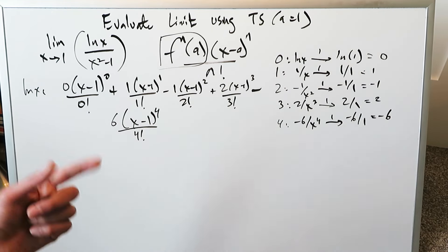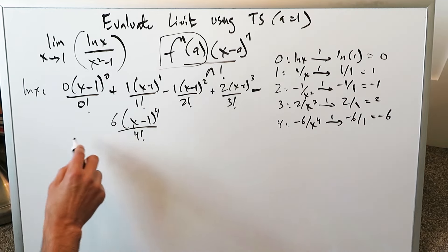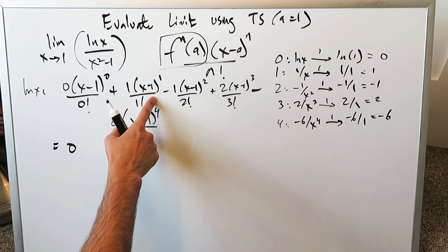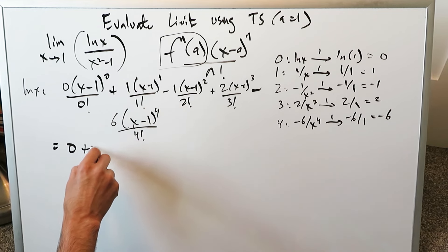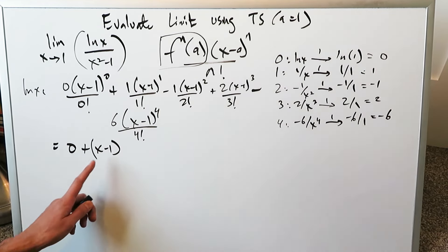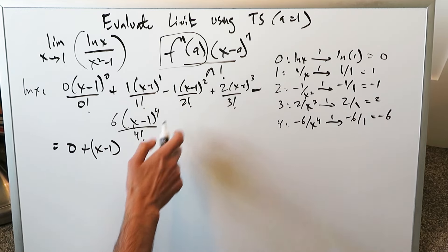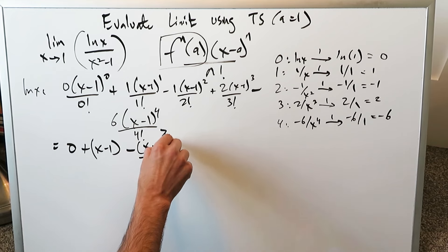I want to clean this out because I have to still evaluate this. When I clean it all out what am I getting? This is zeroing out. Here I'm getting really just a plus x minus 1, but I'm keeping it in parentheses for a specific reason. From here minus 1 over 2, I'll just write x minus 1 whole squared divided by that 2.